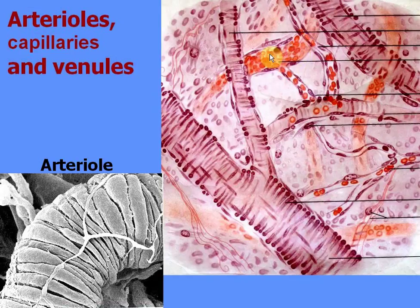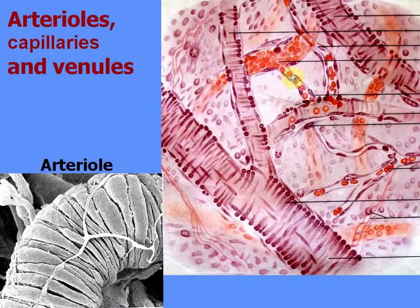Venules are of the same size as arterioles but have no transverse striation because they contain no smooth muscle cells. They usually contain a lot of blood. Between arterioles and venules there is a blood capillary — the smallest blood vessels of the body. Their diameter is usually about 10 microns, so only one erythrocyte at a time can pass through. Erythrocytes are located in a line like a chain, and blood moves slowly through capillaries where exchange of substances takes place.